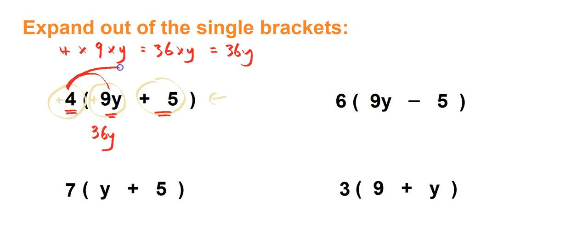And then the next step would be to multiply 4 again, the term that's outside of the brackets, by the next term inside the brackets that we haven't used yet, and it's positive 5. So 4 times positive 5 is positive 20. And this is the expanded form.